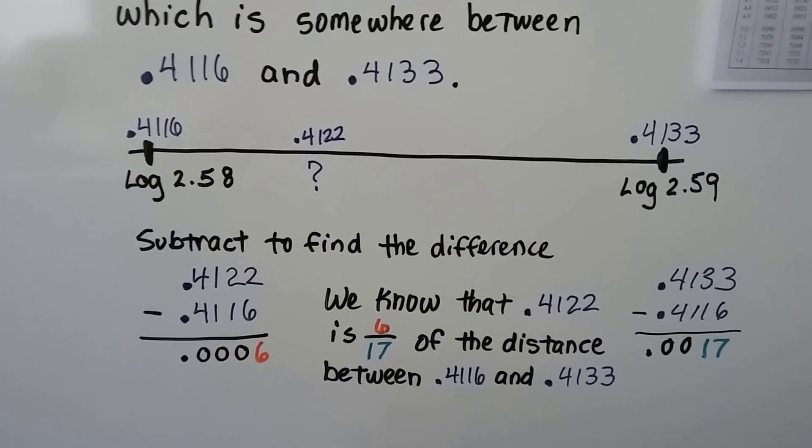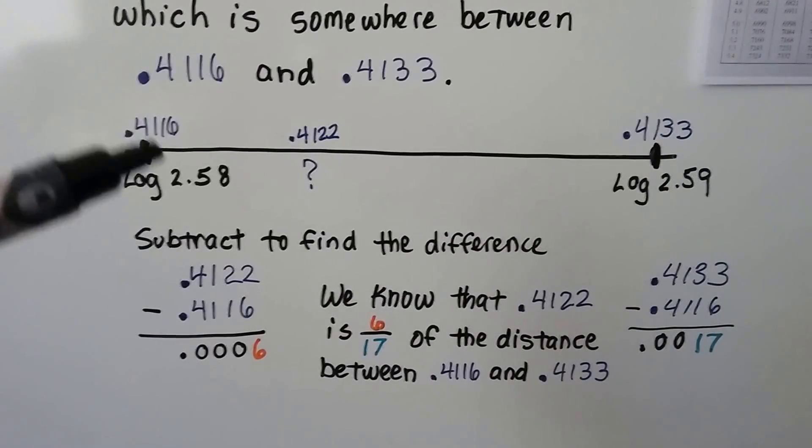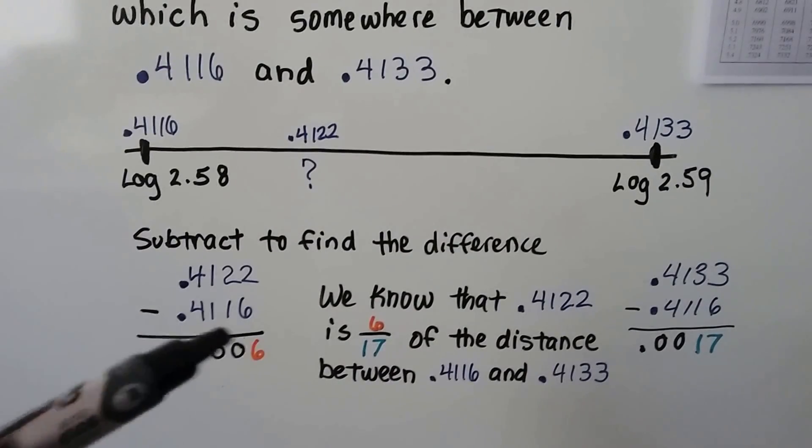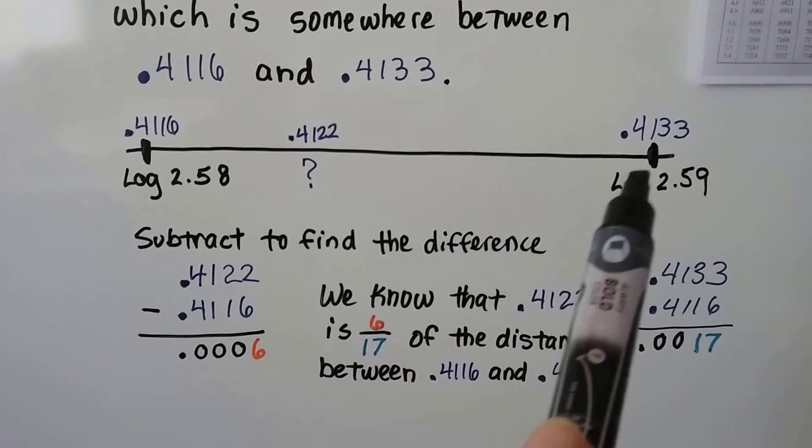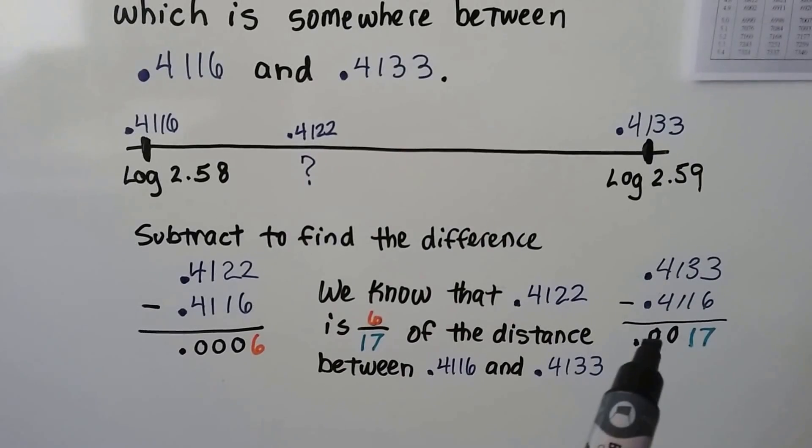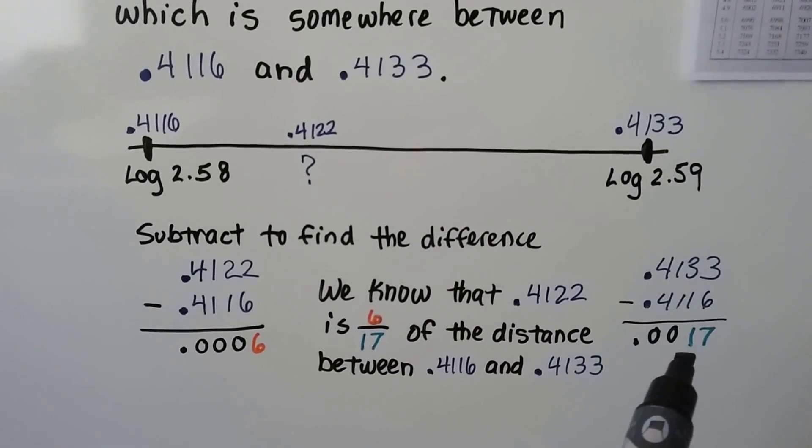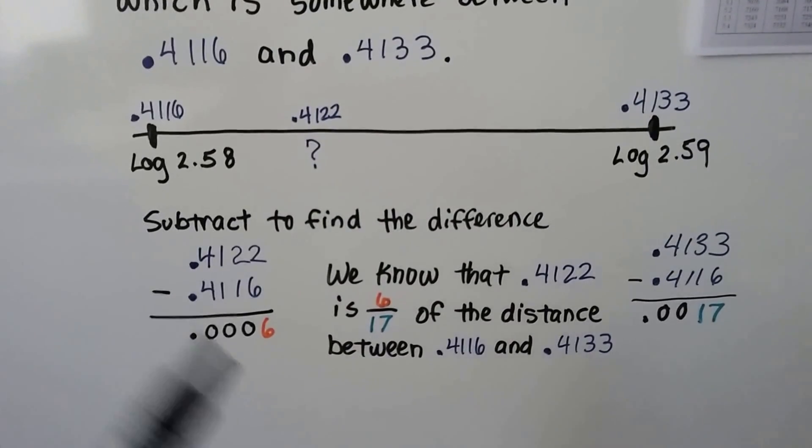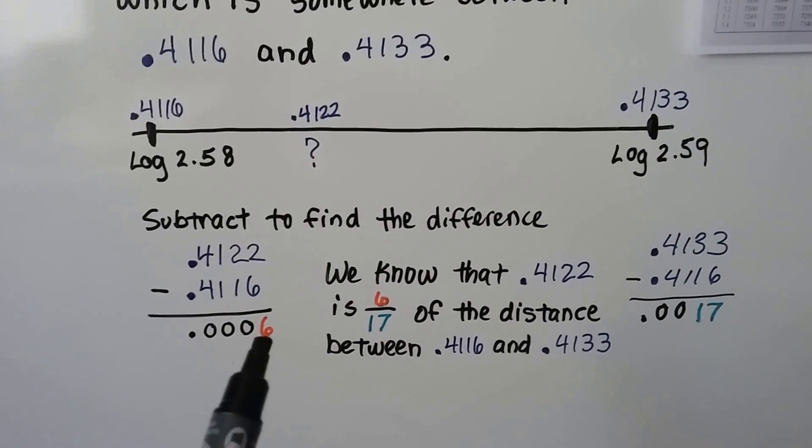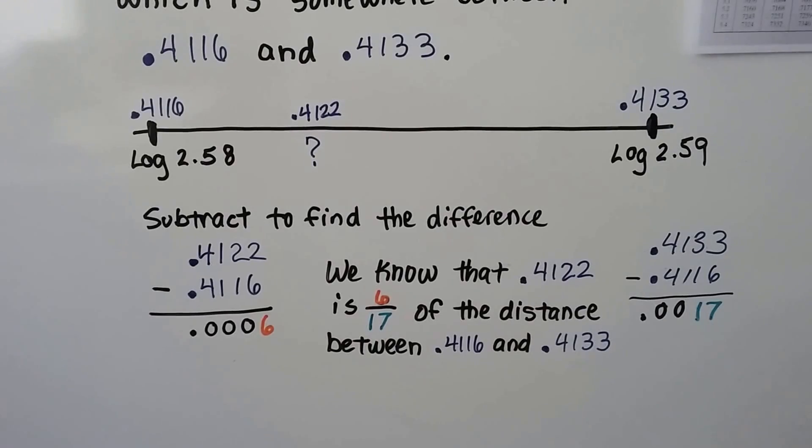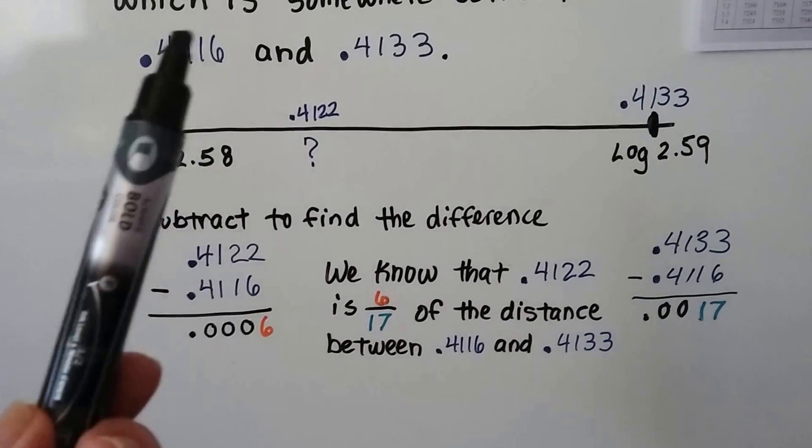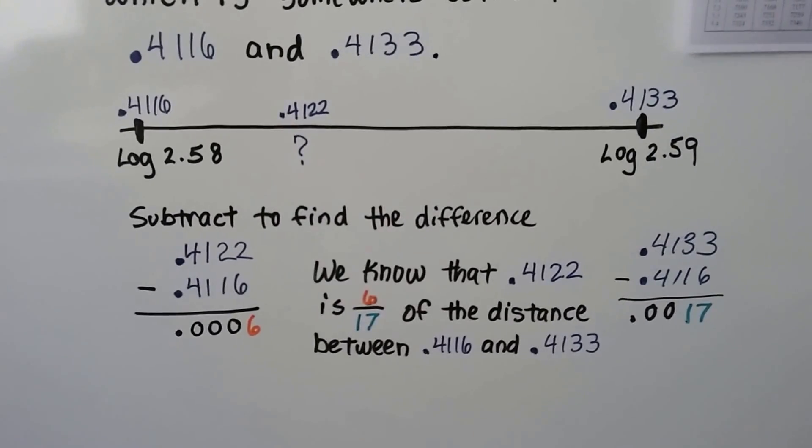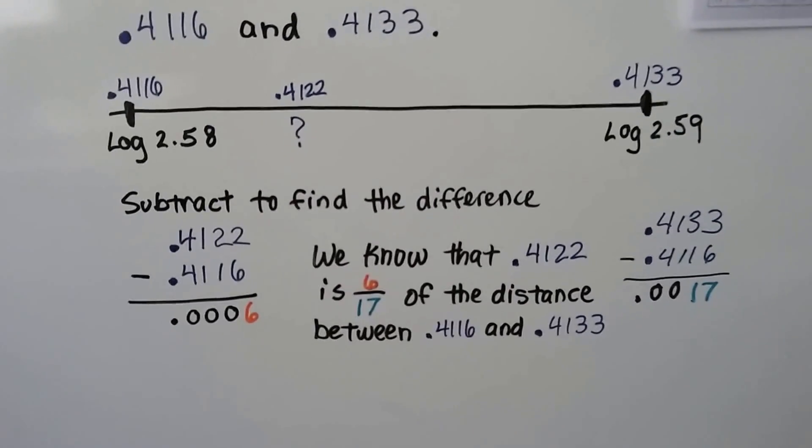What we do is we subtract to find the difference. We subtract this one from this one, and we get a .0006. We subtract this one from this one. This is the larger number. So this is going to be .0017. So we know that this .4122 is 6 seventeenths of the distance between this one and this one. It's 6 seventeenths, close to one-third of the way.